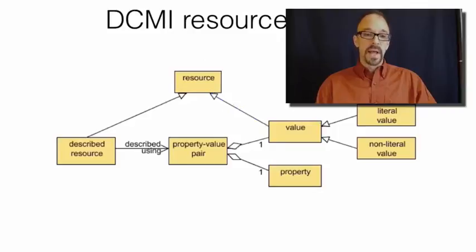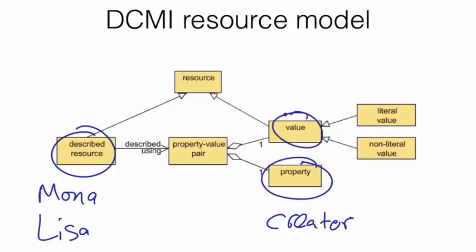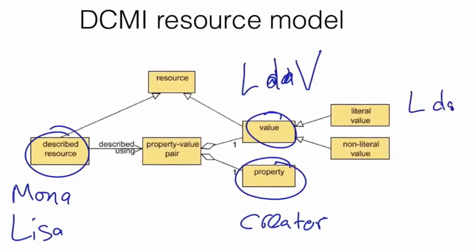So an example will probably help make that clearer. A value is assigned to a property. For example, we're talking about the Mona Lisa. The Mona Lisa is the described resource. The property is equivalent to the element, so creator. The value of the property, creator, is Leonardo da Vinci. The literal value is Leonardo da Vinci, the words Leonardo da Vinci. The non-literal value is the actual person, Leonardo da Vinci.